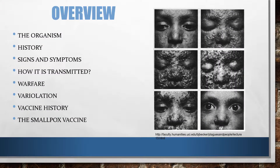Here is an overview of what you will learn in this presentation. We'll learn about the organism, its signs, its symptoms, and how one can get it. We'll learn about the history and how it was used in warfare. We'll also learn about variolation, the vaccine history, and then about the vaccine itself.